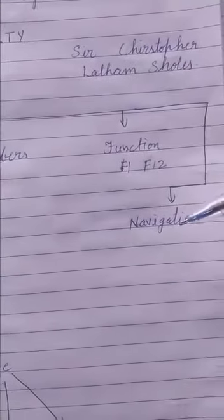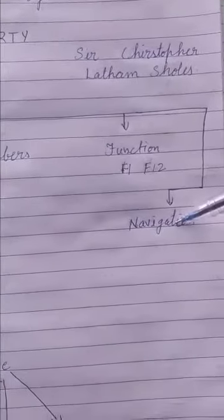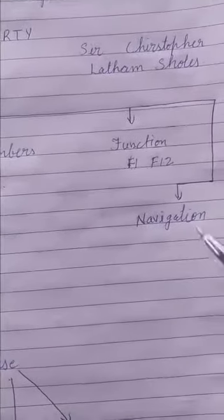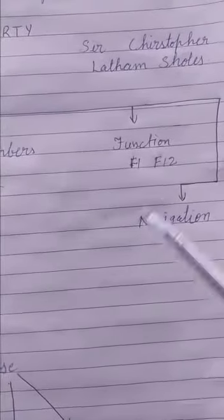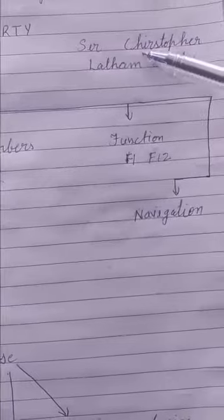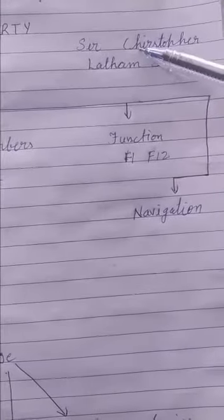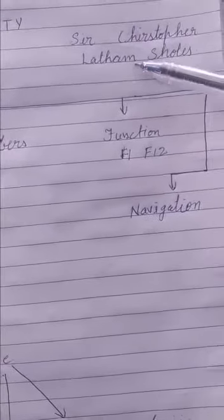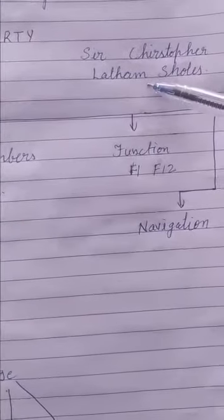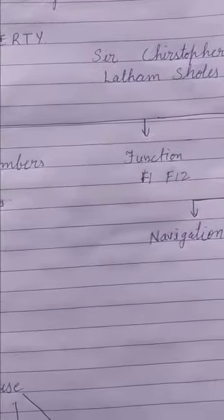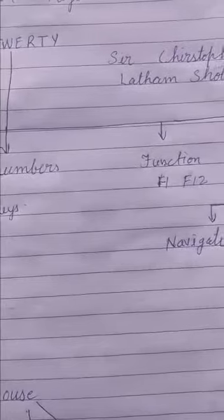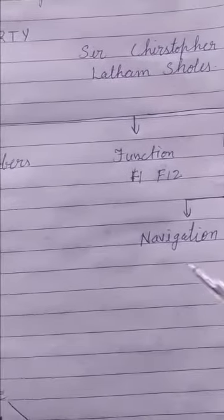Then the next one is navigation keys. Navigation means to move from one point to another. Suppose we are now on the first row, then we want to move to the next one. So how we will move? We will move via navigation keys.